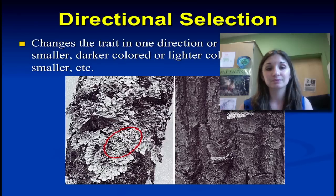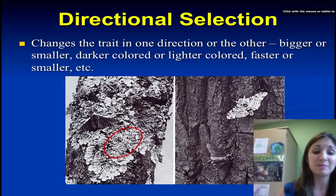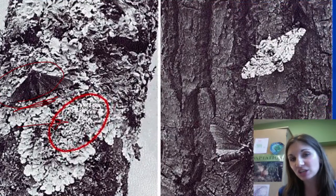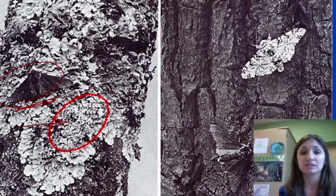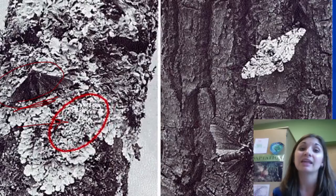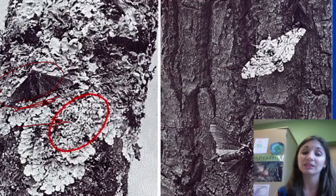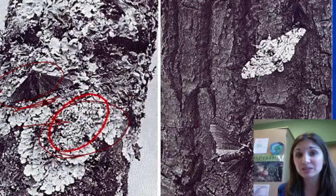A great example of directional selection can be found in peppered moths. On this tree, can you find the peppered moths? One sticks out like a sore thumb — the dark moth. The light moth is really well camouflaged and blends in beautifully. If you're a predator like a bird relying on its visual system, you're going to eat the insect that is readily available — the dark-colored moth in this scenario. Over time, if the light-favored moth is favored, we'll move the population so that more and more light-colored moths are present, simply because the light-colored ones are surviving to reproduce and pass on that trait.